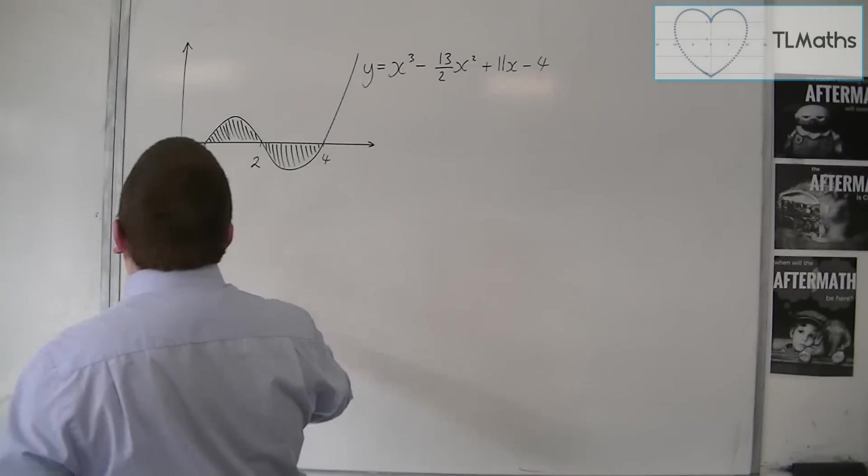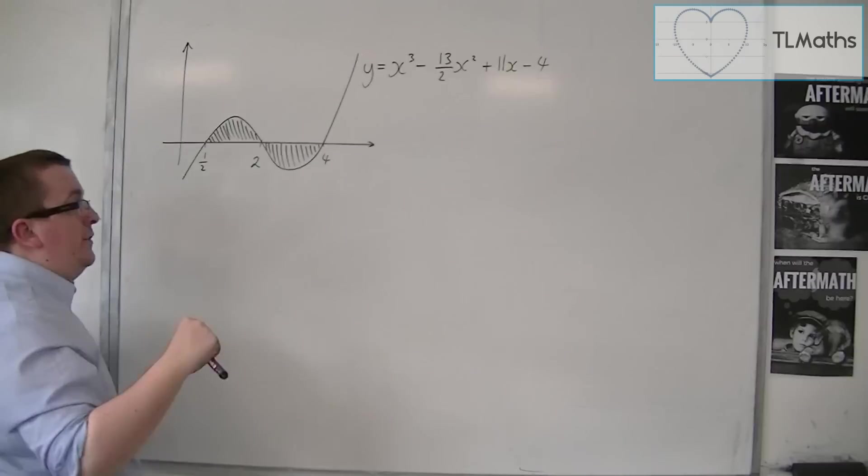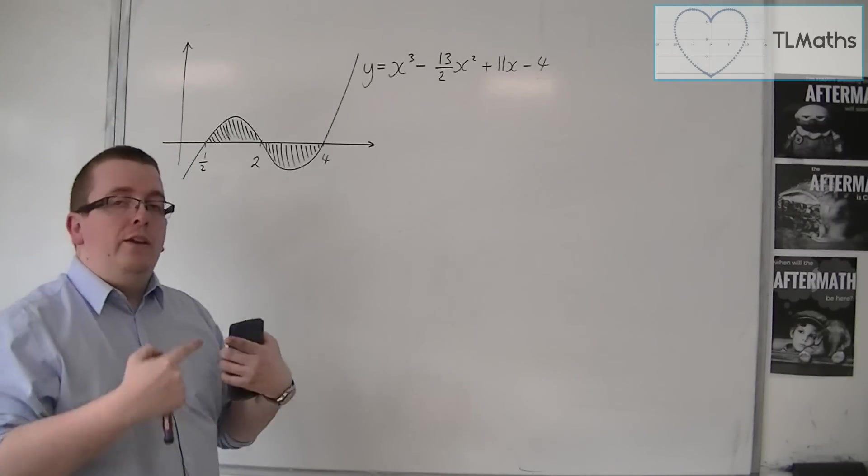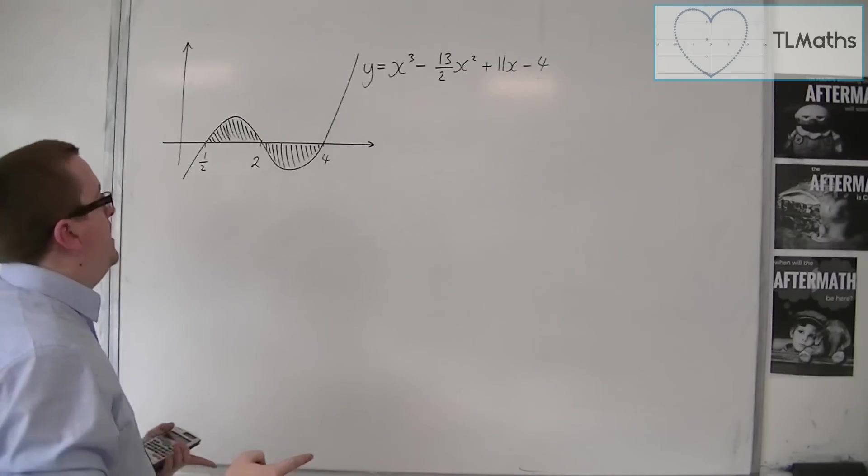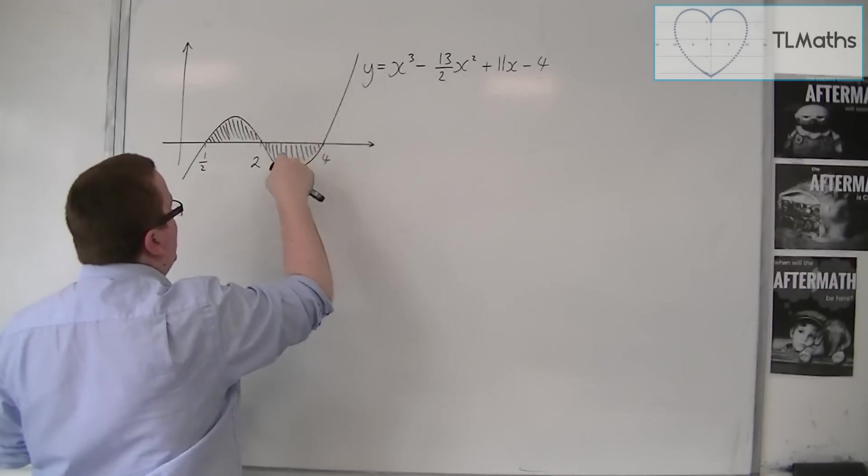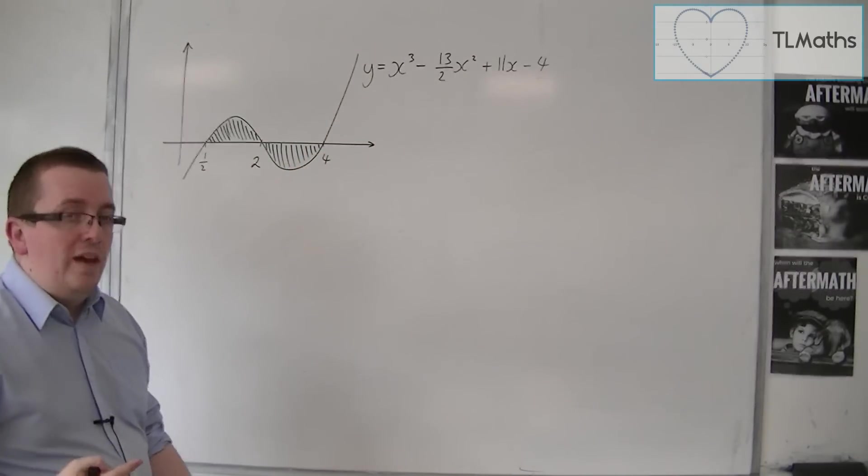So the shaded area consists of two sections and from previous videos I know that I really need to split this up into two separate integrals. I know also that this one will give me a negative integral so I need to contend with that.